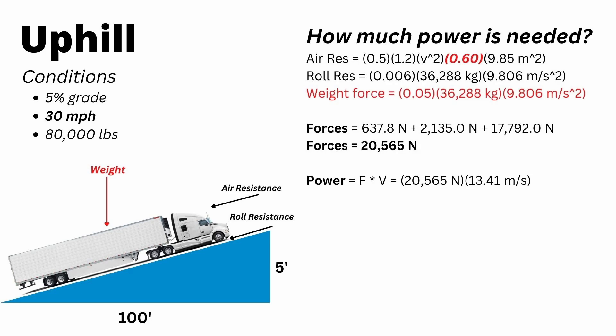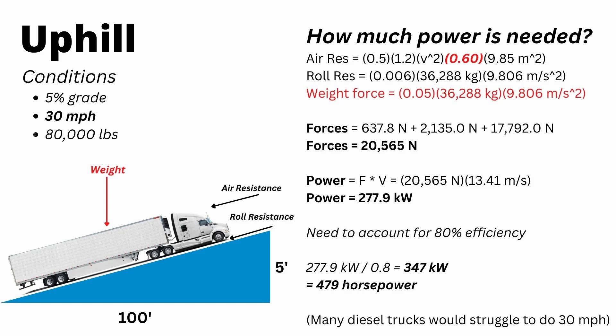So using the same method as before, we multiply by velocity again to get our power. And we see that power to maintain this 30 miles an hour at full 80,000 pounds is about 288 kilowatts. A diesel truck is not as efficient as an electric truck. We're going to assume about an 80% drivetrain efficiency. And that means that diesel engine is going to have to make about 479 horsepower to maintain just 30 miles an hour up this grade. And most diesel trucks don't even make 480 horsepower. They make somewhere in the neighborhood of 400 to 450. So this scenario would actually be a bit of a struggle for a diesel truck, and it would probably be doing as little as 20 or 25 miles an hour.